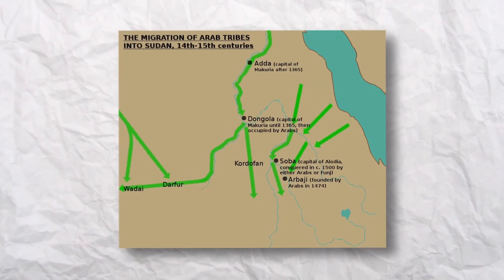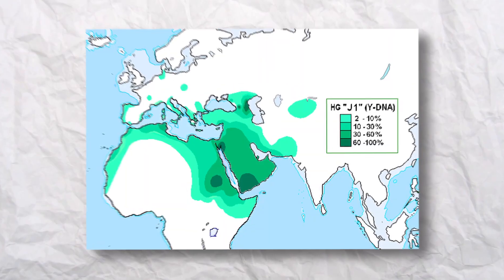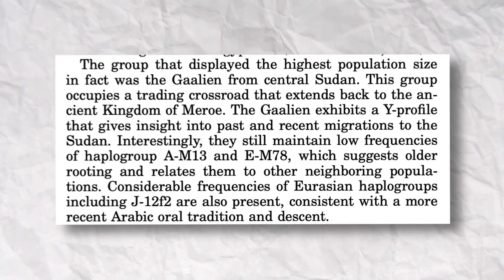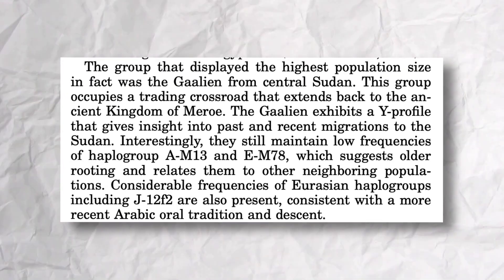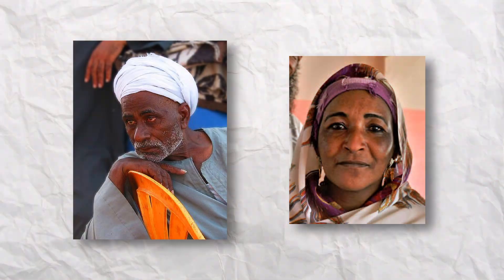Sudanese Arabs are people who migrated to this region more recently, and you can see this because Arabs are the ones who carry most of the J-haplogroups or markers of Arabian origin. So those would be groups like the Jogas and Jallies, while Sudanese Nubians would include groups like the Danagla. I'll leave pictures on screen while talking about them.